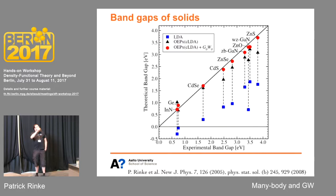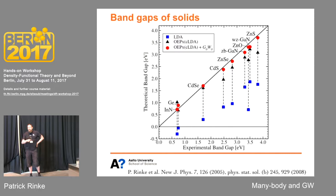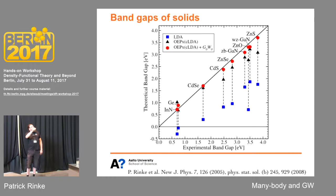Here are computed band gaps versus experimental band gaps for several materials. If we had a perfect theory, everything would fall on the diagonal. With just LDA eigenvalue differences, we're way off and the error is not even very systematic. If we switch to a different DFT functional with exact exchange, we do quite a bit better. But really, the big improvement comes from GW — if you do a proper GW calculation, we're actually very close to the diagonal. So we have a high accuracy method for band gaps.